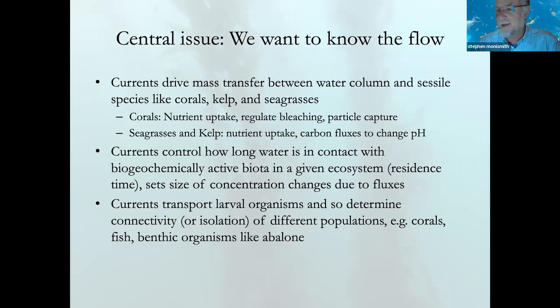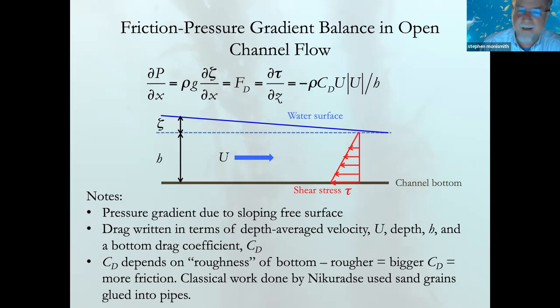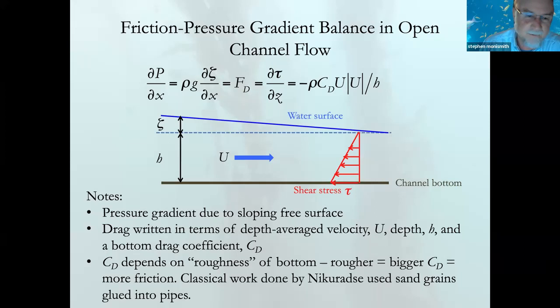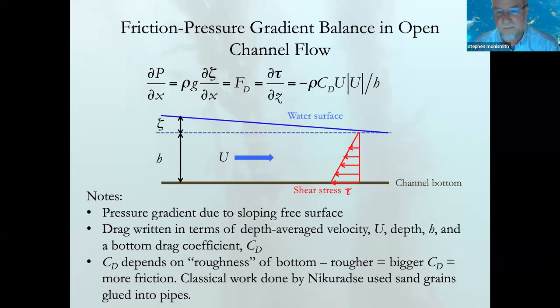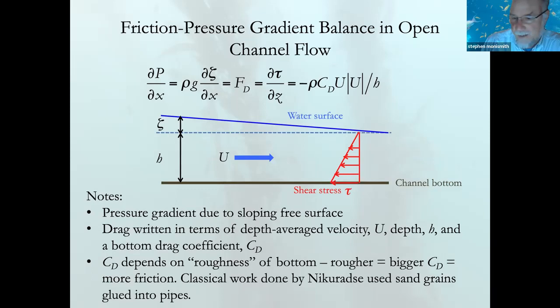A lot of what I'm going to show goes back to the fundamental thing we teach in fluid mechanics about open channel flow: pressure gradients produced by a sloping free surface, labeled zeta, balancing bottom drag. The history of Manning's equation is pretty amazing — the only reason Manning's name is associated with it is that he wrote it in English, whereas his predecessors wrote it in French and German and got the same result, but not being in English in the late 19th century, it didn't count.